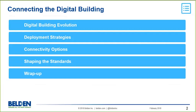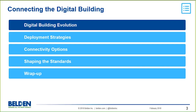At Belden and across the industry, the concept of the digital building has emerged in which many previously separate network systems come together to support all the functionalities needed to support an entire enterprise building. With this transformation comes new processes and challenges. We're going to go over a brief section on digital building evolution, new deployment strategies, connectivity options, what's going on in the standards to help connect the digital building, and then finally wrap up.